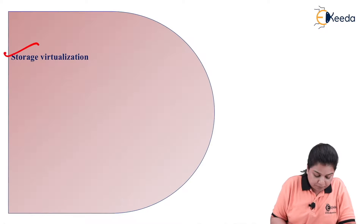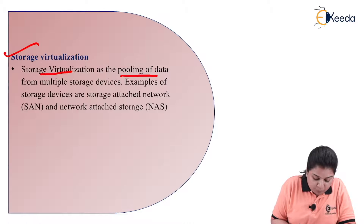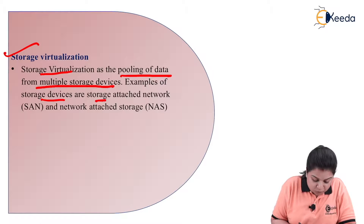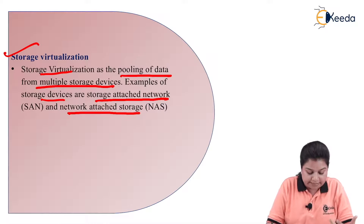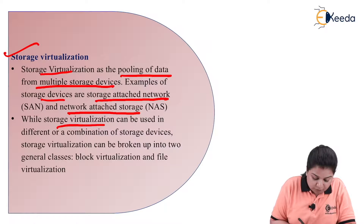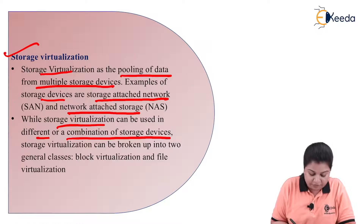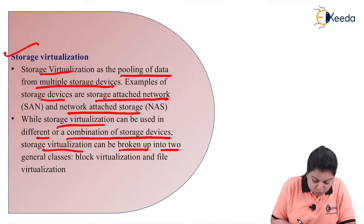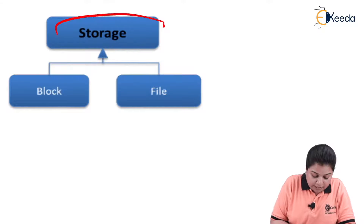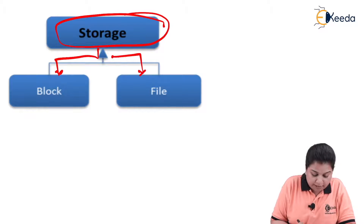Storage virtualization is the pooling of data from multiple storage devices. Examples of storage devices are Storage Area Network and Network Attached Storage — SAN and NAS. Storage virtualization can be broken up into two general classes: block virtualization and file virtualization.